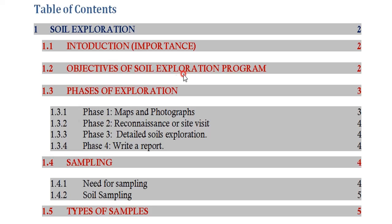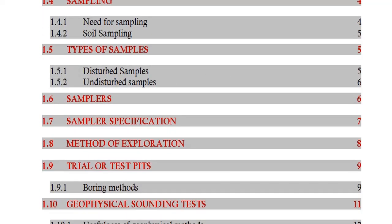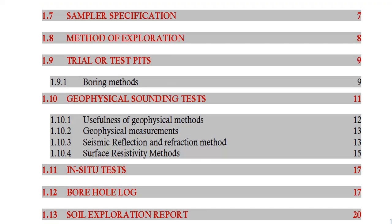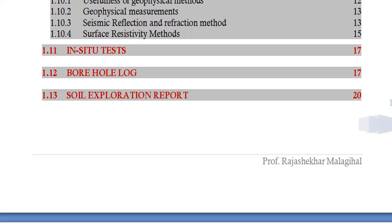The topics covered are: introduction, objectives of soil exploration, phases of soil exploration, sampling, types of samples, samplers and sampler specifications, methods of exploration including trial pits with four methods, borehole log, and soil exploration report. This chapter is completely a theory chapter and is somewhat very easy.